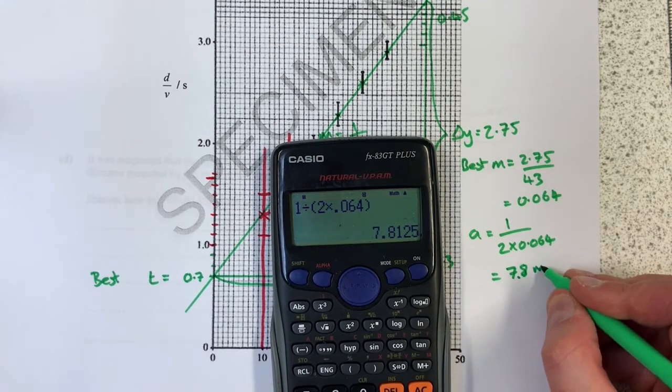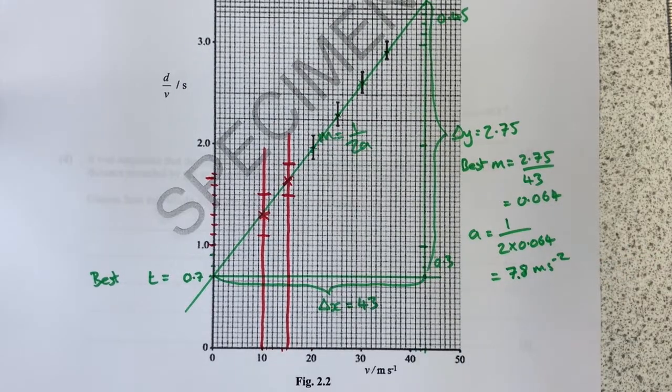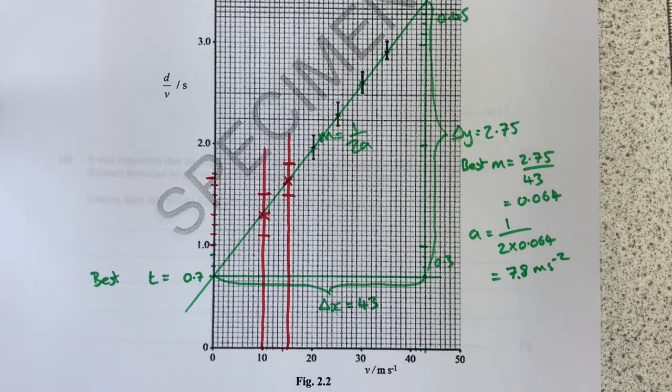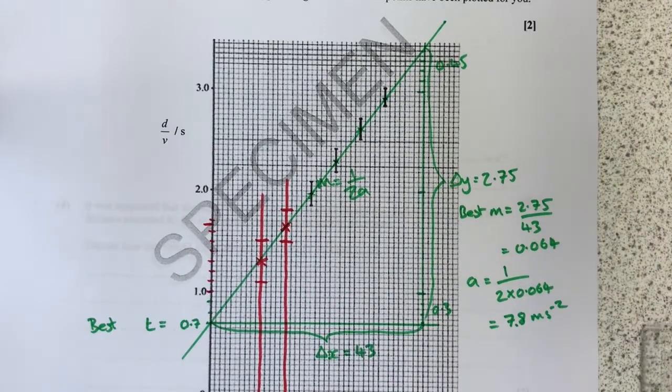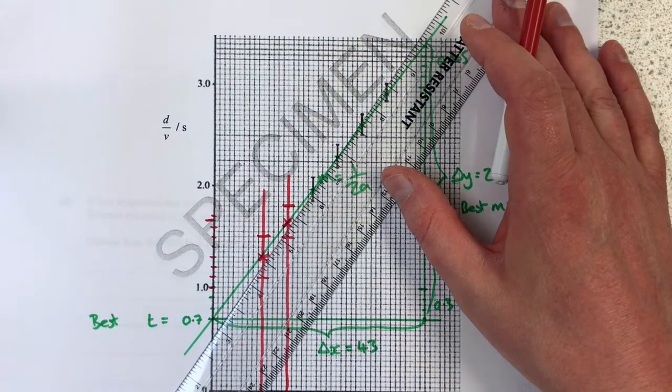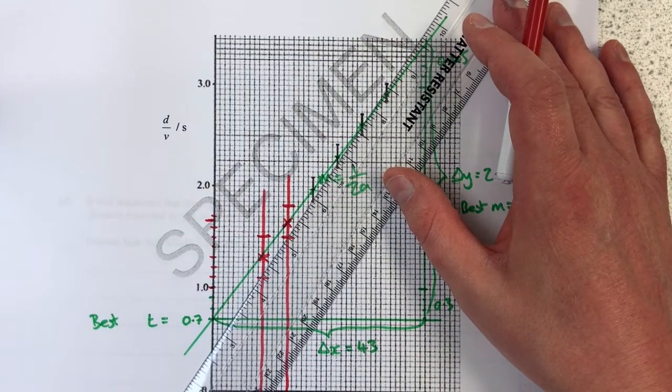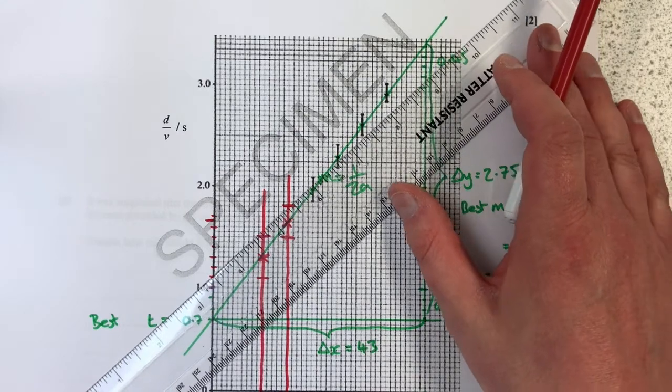Now I have to do the whole thing again, but this time I have to choose the worst possible line to fit this graph. You can either do the steepest line you can get away with or the shallowest line you can get away with.